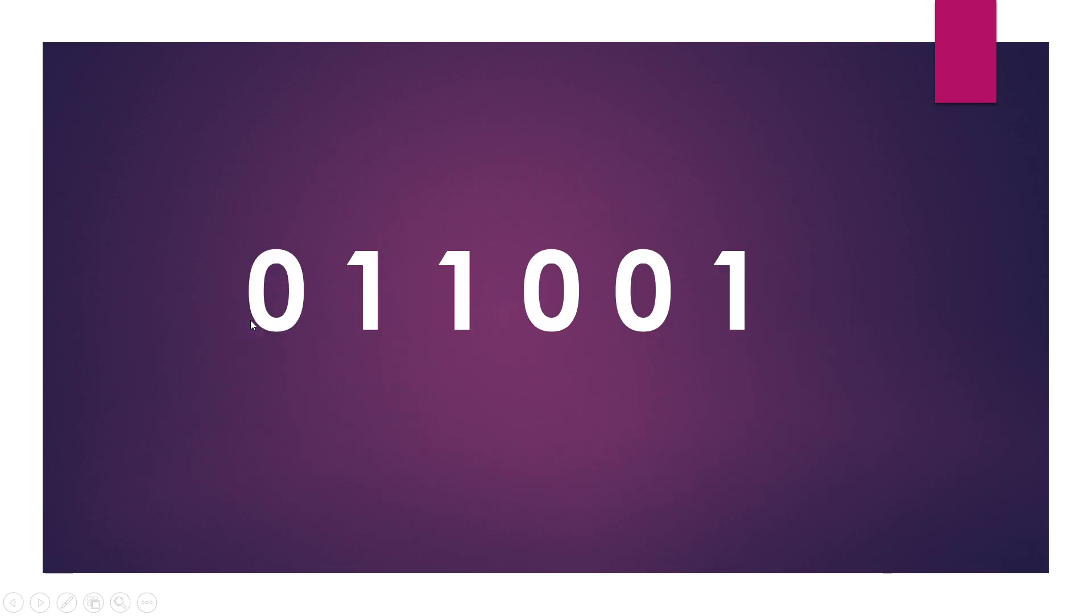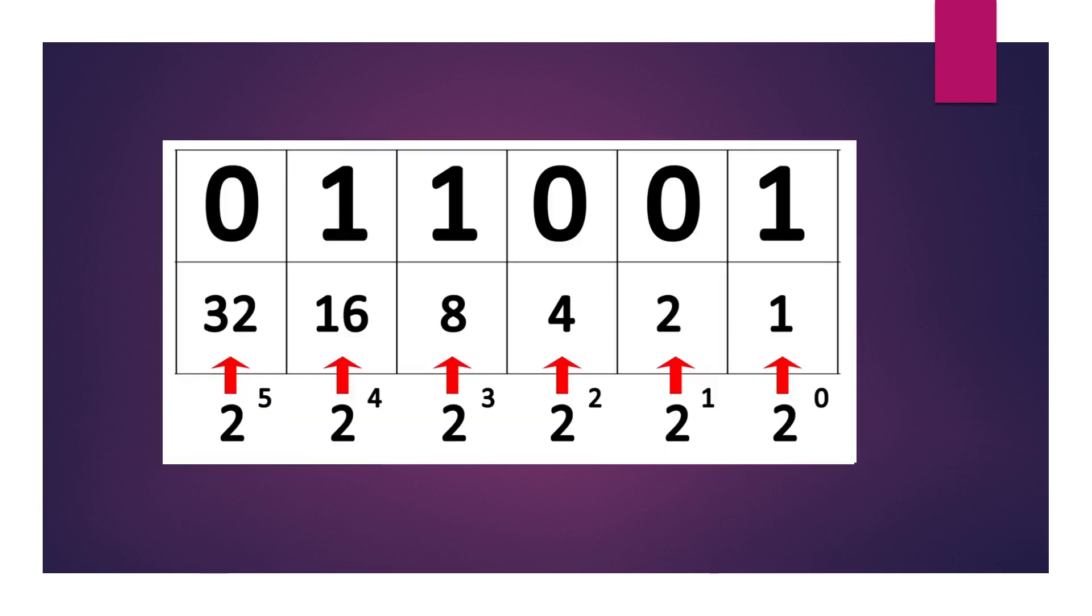Now what about the binary number? It is 0, 1, 1, 0, 0, 1. We have already discussed that binary is only 1s and 0s. As this number has the base 2, like the base 10 system we discussed, this is in the power of 2. So 2 raised to the power 0, 1, 2, 3, 4, 5.